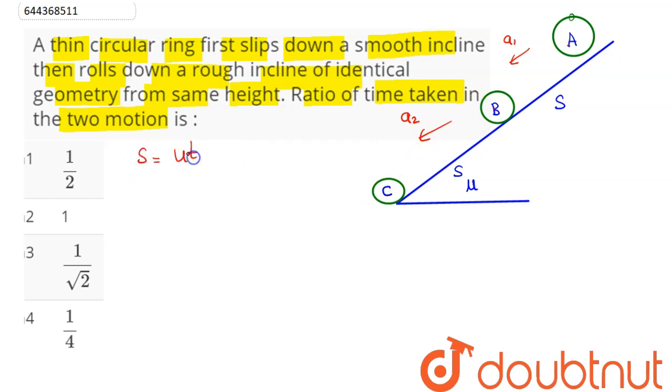Hence we have here S equal to UT plus half AT square. So we can say U is 0. So S is the total distance traveled. U is 0, hence half of AT square.